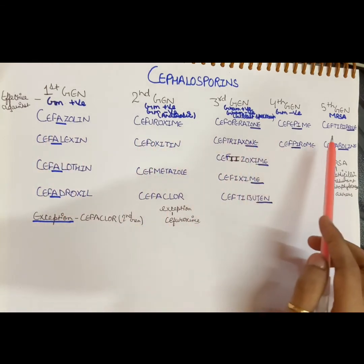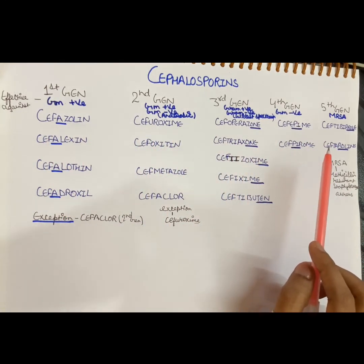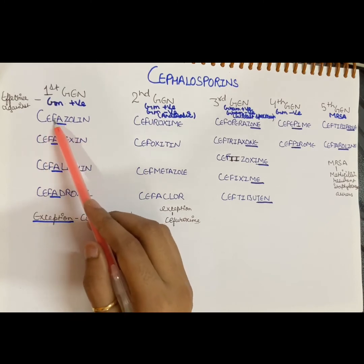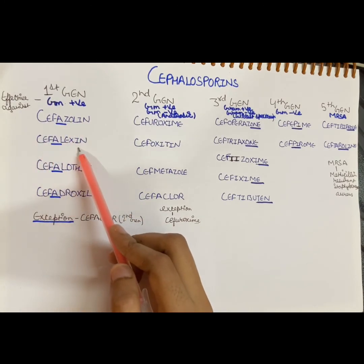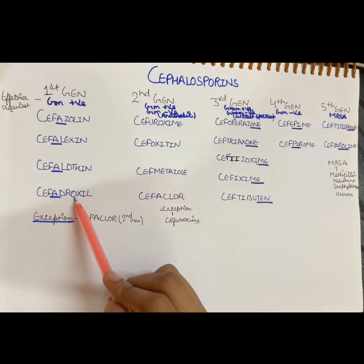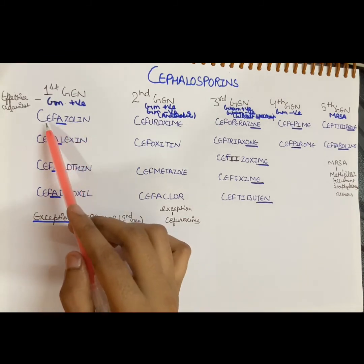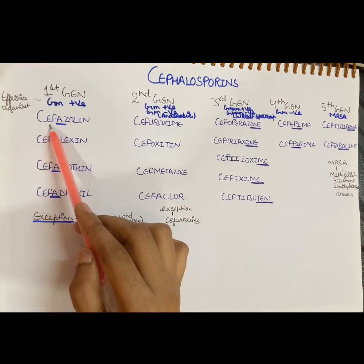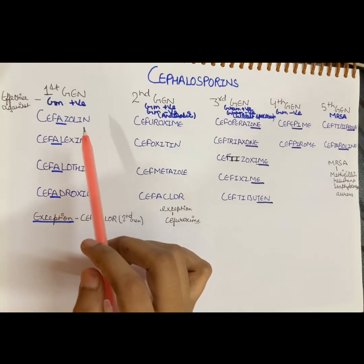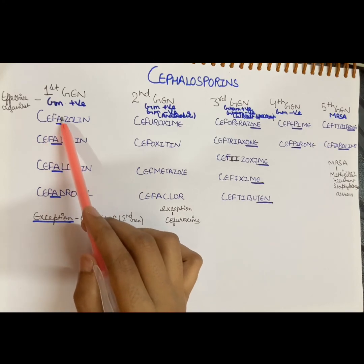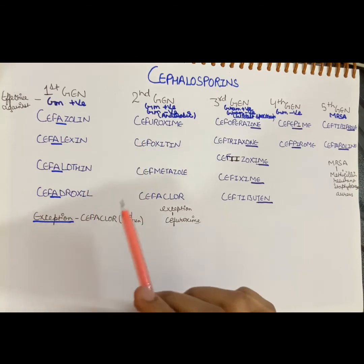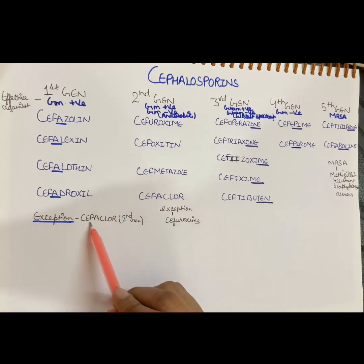You have seen that 'Ceph' is common in every generation. Now moving to the first generation: what we see is that 'A' is found after Ceph — for example, Cephazolin, Cephalexin, Cephalothin, Cefadroxil. So in the first generation, whenever 'A' comes after Ceph, it belongs to the first generation drug.